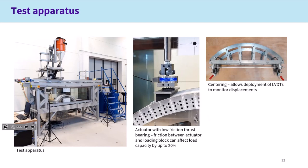That's a shot of the rig — I think Matthew showed that yesterday. So that's the kind of scale we're working on. We build the arch in here and have pluviation for putting in backfill. For loading, we use an electric actuator. One of the things we found in the initial test was that friction between the actuator and the loading block is quite an important effect. The actuator doesn't provide a dead weight — it provides a load that just goes vertically. If you get any horizontal components of load, that can affect the load capacity by up to 20%. Putting a thrust bearing in there did the trick. We've also got a centering that we can lower and raise quite easily to build the arch on and deploy LVDTs.